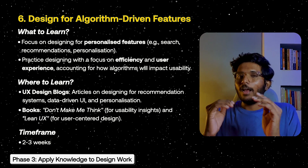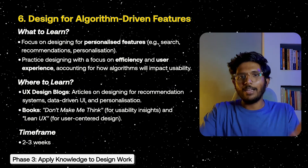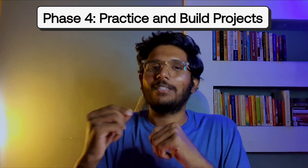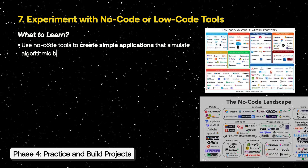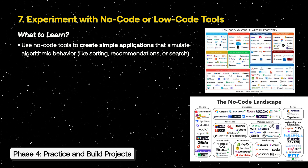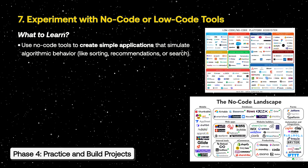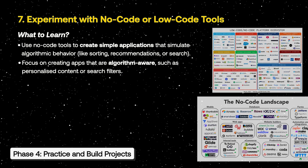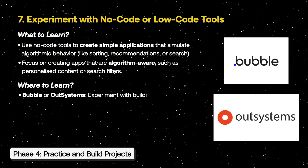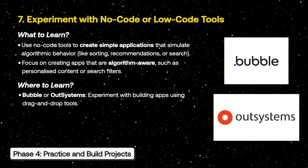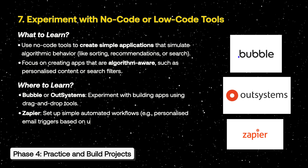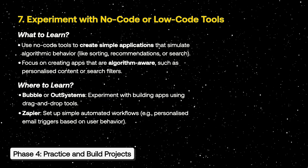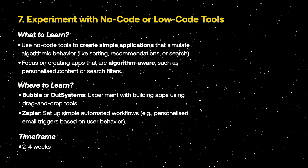These timeframes may seem short, but they will give you a basic understanding alongside your work and job, and you will have to master it over time. In phase 4: Practice and Build Projects. Use no-code or low-code tools to create applications. Simulate algorithmic behaviors like sorting, recommendation, and search — design algorithmic-aware apps. Practice using tools like Bubble and OutSystems — these are drag-and-drop tools for experimentation. Set up simple automated workflows like personalized email behavior based on user behavior. Spend 2-4 weeks or a month in phase 4.